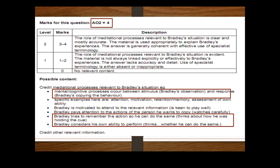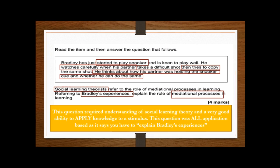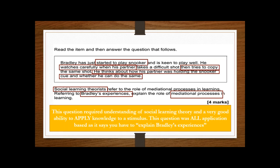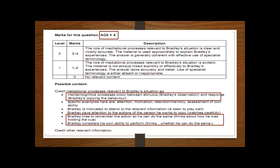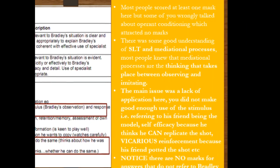If we do look at what was credit-worthy, you needed to be talking about the cognitive processes that occur between the stimulus—so him observing his pal—and responding, so copying. And you also needed to be talking about self-efficacy, the fact that he forms a mental representation of his friend holding the snooker cue, whether or not he can repeat it. Talking about the fact that his friend is the same gender as him, which makes imitation more likely. If there's any vicarious reinforcement—so if his friend, because if we look back at the stimulus, if his friend has potted the difficult shot, then that's obviously going to act as vicarious reinforcement and that will allow him to want to imitate that behavior.